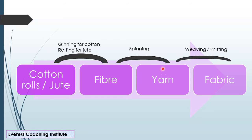Now, for cotton: in the ginning process, we separate the cotton seeds and the fiber is removed. Then we convert the fiber to yarn using the spinning process. In the spinning process, we used two simple devices — we also used machines. So our fiber is converted into yarn.